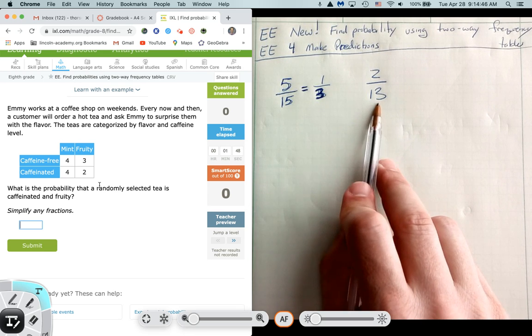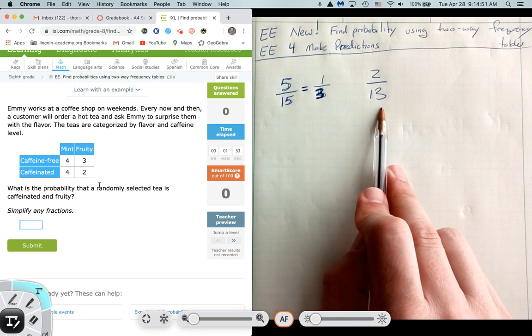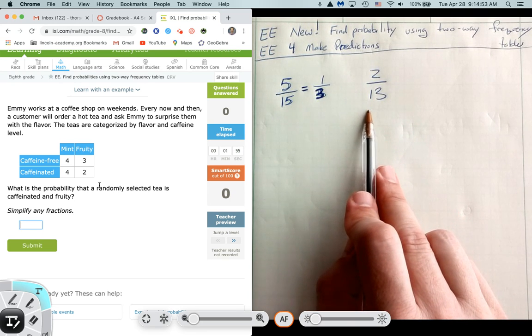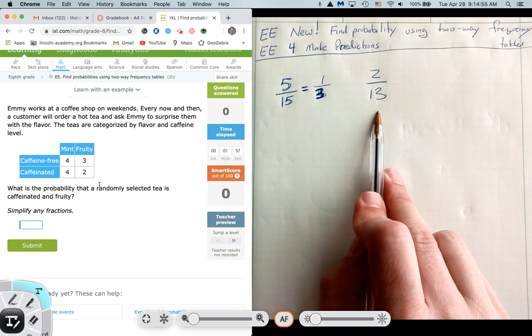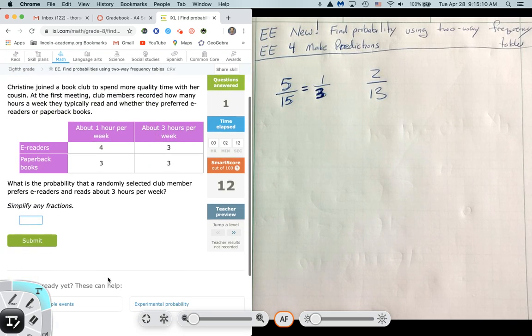And remember, probabilities a lot of times will be written as a fraction, and we always try to reduce it. By the way, this fraction should always be less than one or less. It might equal one, but one's the biggest it can be, because that would mean it has 100% probability. You can't have higher than 100% probability, so the fraction should be usually less than one. So 2 out of 13.